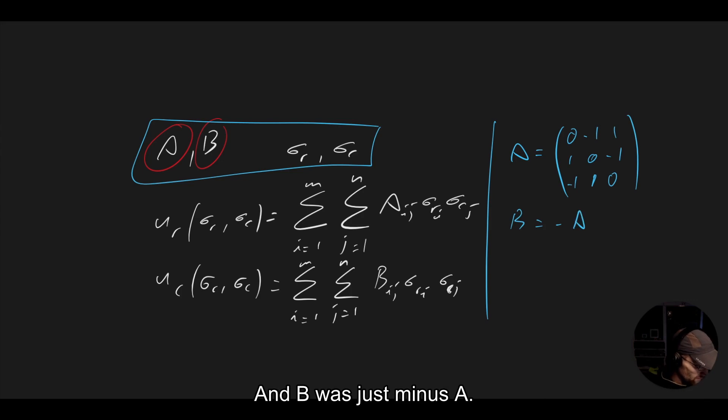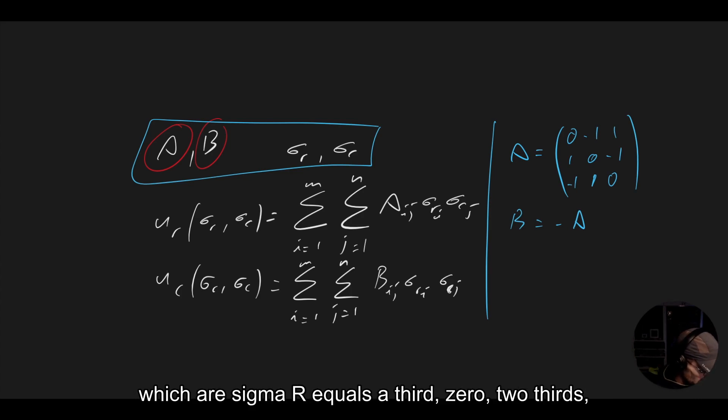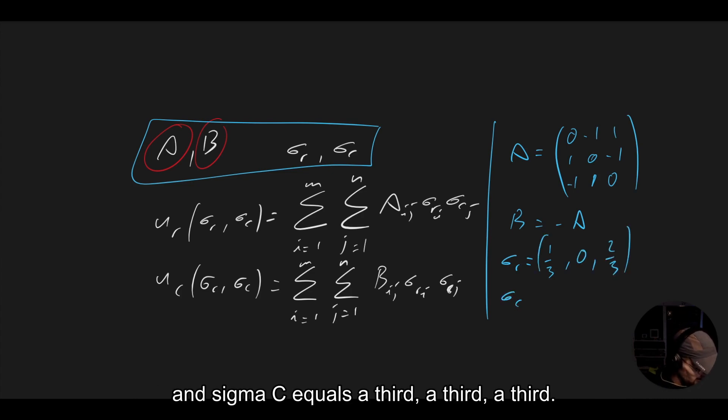And B was just minus A. So if we have this, and we have the following strategies, which are sigma R equals a third, zero, two thirds, and sigma C equals a third, a third, a third, what is the expected utility?